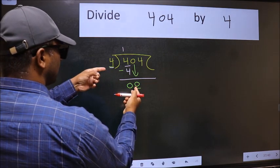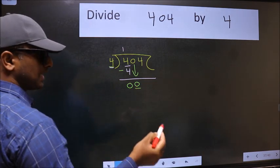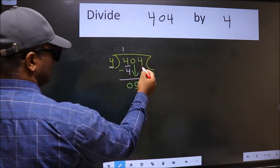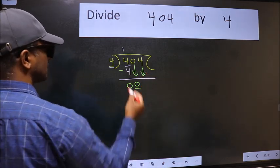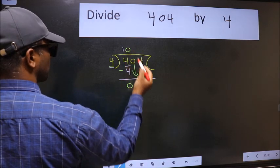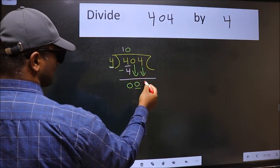0 is smaller than 4. So we should bring down the second number. And the rule to bring down the second number is we should put 0 here. Then only we can bring this number down.